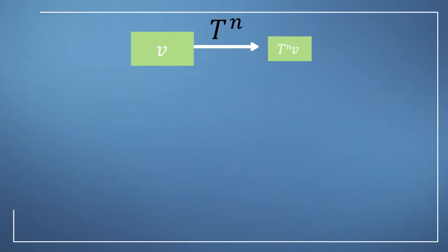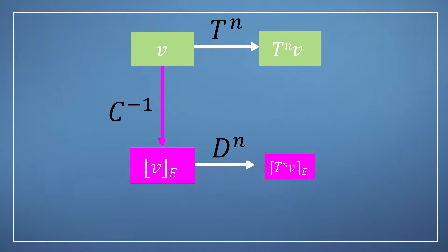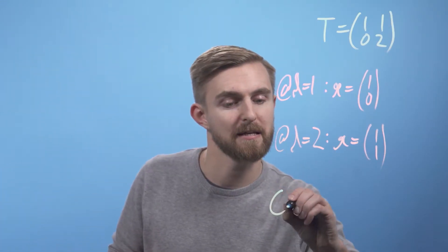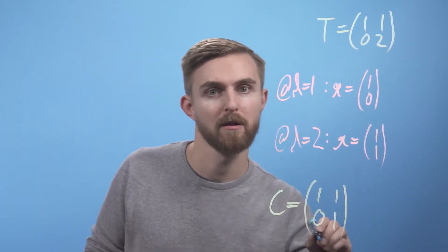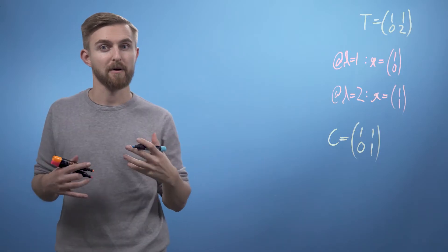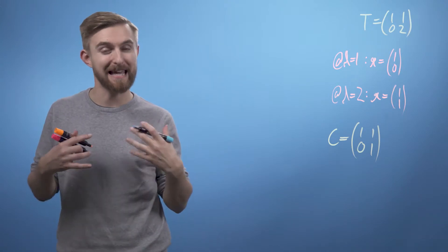We can now try this whole process again, but using our eigenbasis approach. We've already built our conversion matrix C from our eigenvectors, so C is going to equal (1, 1; 0, 1). But we're now going to have to find its inverse.